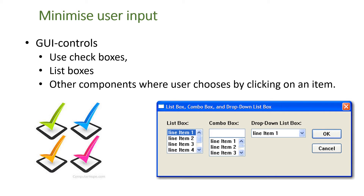We can minimize user input, and that's things like GUI controls like checkboxes where you can tick or untick a field, list boxes where you only give people a certain amount of choices to click on — like the cities could have been a list box — and other components where a user can just click on an item. This will avoid user input error.